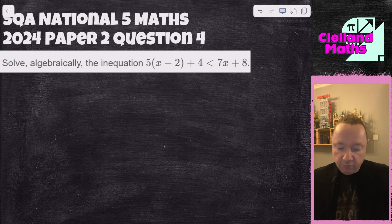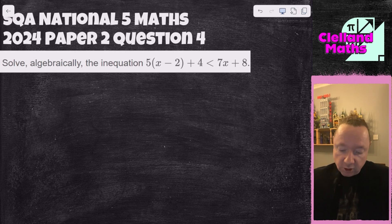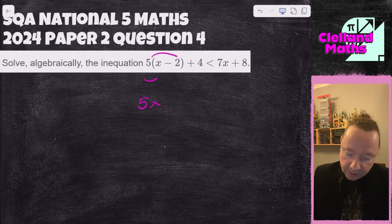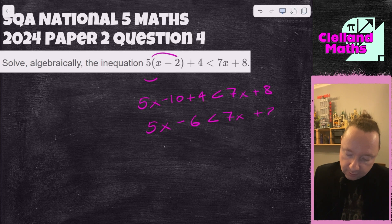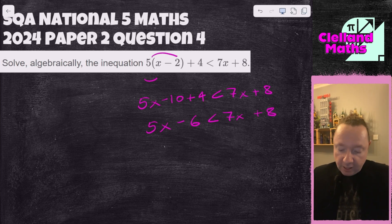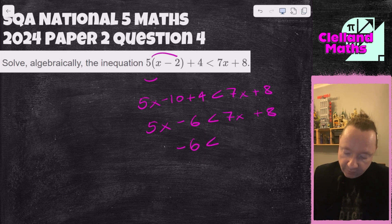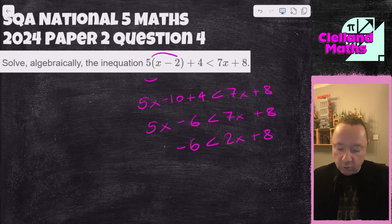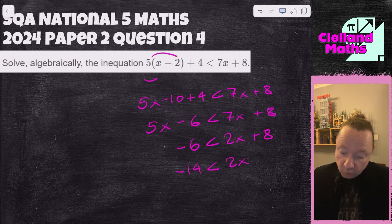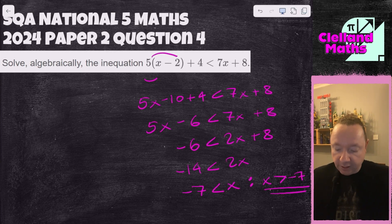SQA National 5 Maths 2024 Paper 2 Question 4: 5(x - 2) + 4 < 7x + 8. Last year's question wasn't as hard as you'd think — no fractions, just expanding a bracket. Expanding: 5x - 10 + 4 < 7x + 8, so 5x - 6 < 7x + 8. Move the 5x: -6 < 2x + 8. Take away 8: -14 < 2x. Divide by 2 — not dividing by a negative, so no flip: -7 < x. Which you can leave like that, or flip: x > -7.